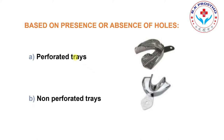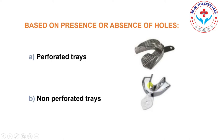On the basis of presence or absence of holes, trays are classified as perforated trays and non-perforated trays. The perforations in the body of the tray — including the floor and flanges — are used to remove excess impression material, remove air bubbles, and mechanically lock the impression material within the tray to avoid separation. For non-perforated trays, you have to apply a tray adhesive before loading the tray with impression material; otherwise there will be separation of the impression from the tray.